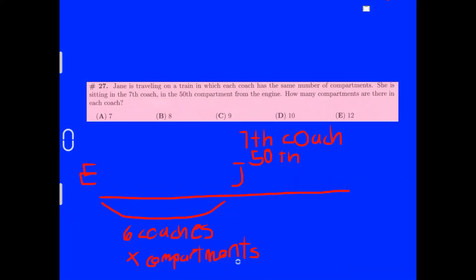Jane is traveling on a train in which each coach has the same number of compartments. She is sitting in the 7th coach in the 50th compartment from the engine. How many compartments are there in each coach? If she's sitting in the 7th coach in the 50th compartment, that would mean there are 6 coaches and X compartments in between the engine and Jane. We have to find the closest multiple of 6 to 50. If we start from 6, it would be 12, 18, 24, 30, 36, 42, and that would be times 7. If we do 6 times 8, we would get 48. If we do 6 times 9, we would get 54, and that's past 50. It would be 48, and 6 times 8 would get you 48.